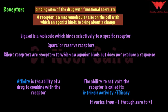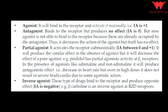An agonist will bind to the receptor and activate it maximally — the ability to activate is called intrinsic activity, so the intrinsic activity of an agonist is plus 1, which means it is at maximum. An antagonist binds to the receptor but produces no effect; it is not activating the receptor, so the intrinsic activity is 0.